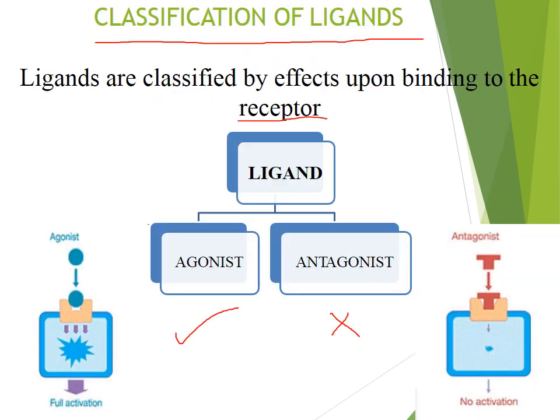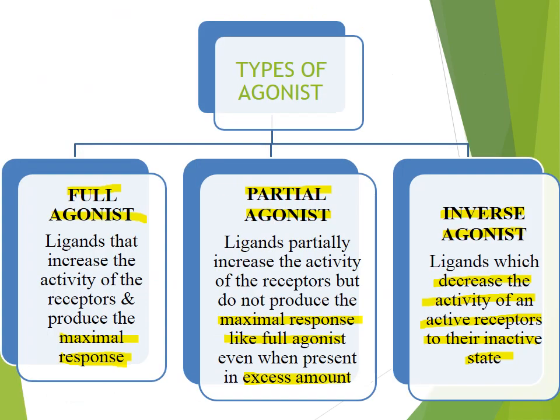Ligands are compounds that bind to receptors — we can also consider them to be drugs. Ligands are classified by their effects upon binding to the receptor. They can be agonists, meaning they activate that particular receptor and cause a cascading secondary effect, or they can be antagonists, which block that receptor and do not allow any biological or pharmacological response. There are three types of agonist: full agonist, partial agonist, and inverse agonist.